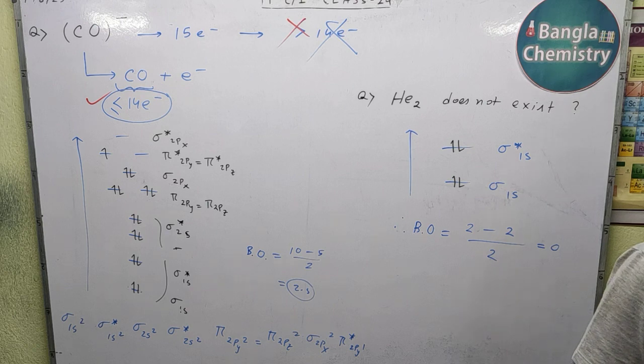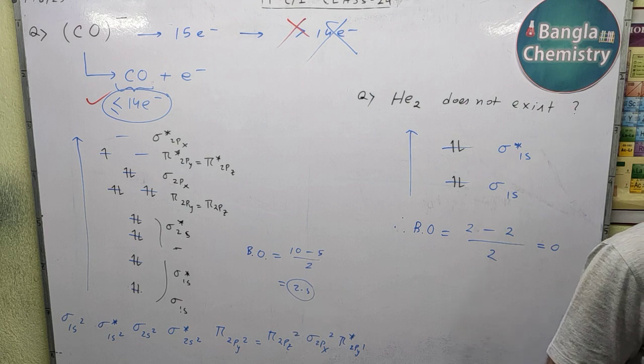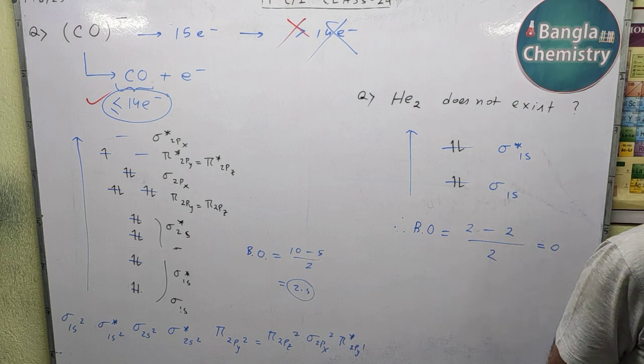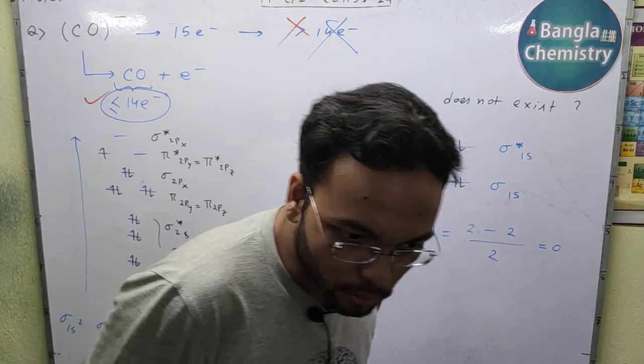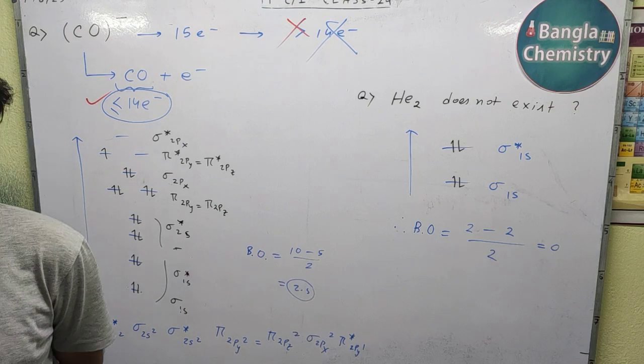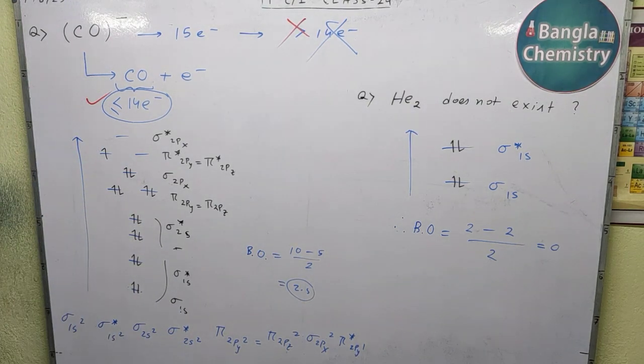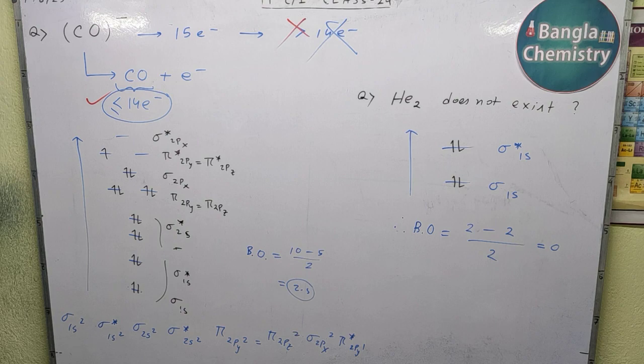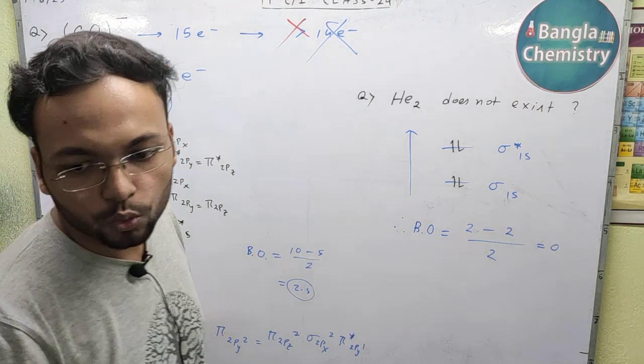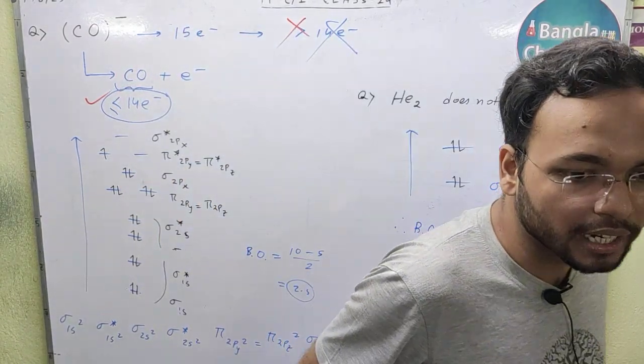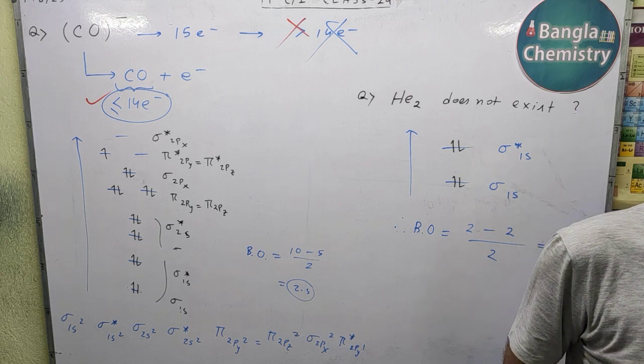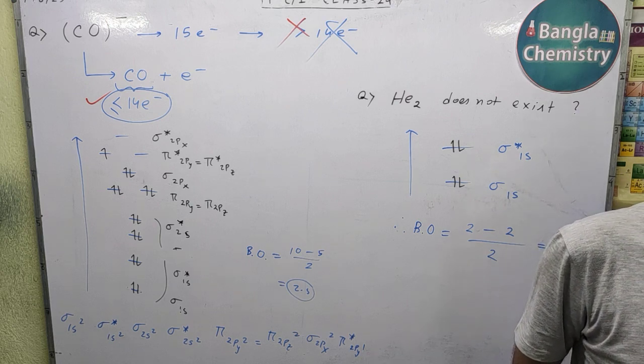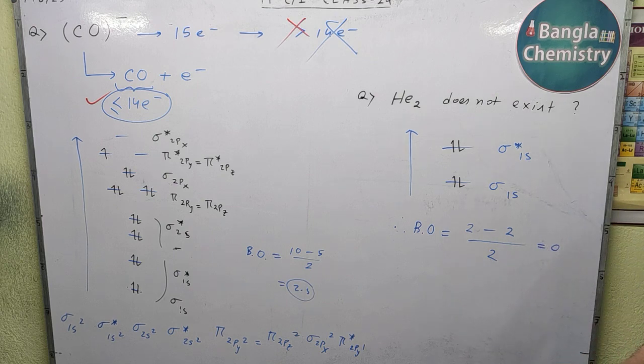Also for CN-, cyanide. For nitrogen, C2... what about N2? N2 minus 3.